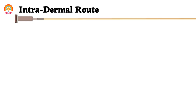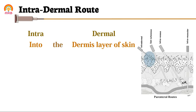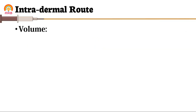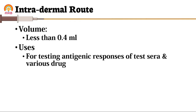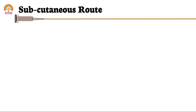Intradermal — this word came from two words: intra meaning into, and dermal meaning the dermis layer of the skin. In this route, drug in solution or suspension form is injected into the dermis layer of the skin. A small volume of drug — less than 0.4 ml — is administered by this route. This route is used for testing antigenic responses of test sera and various drugs like penicillin, vaccines, etc. It is also used for administration of vaccines like BCG vaccine and smallpox vaccine.